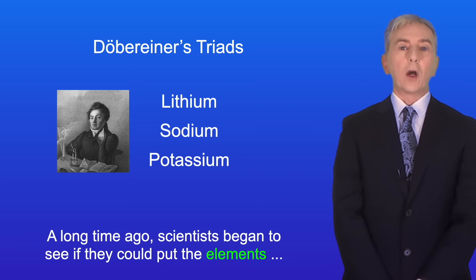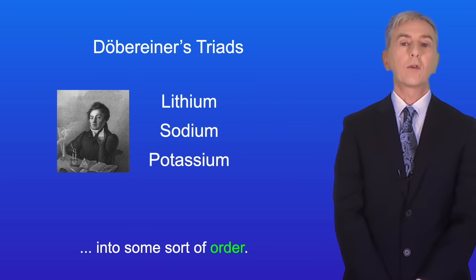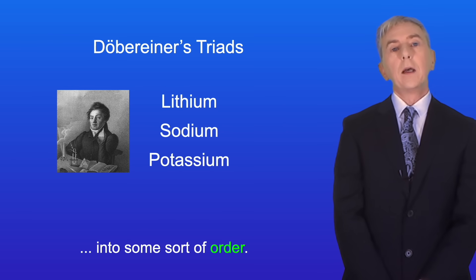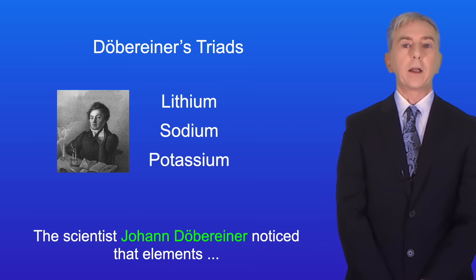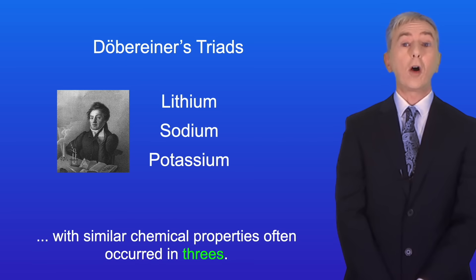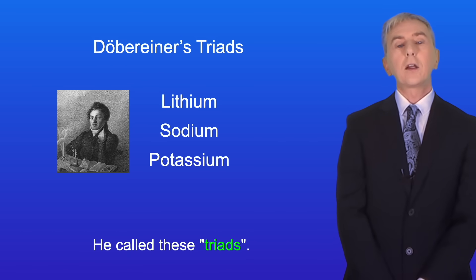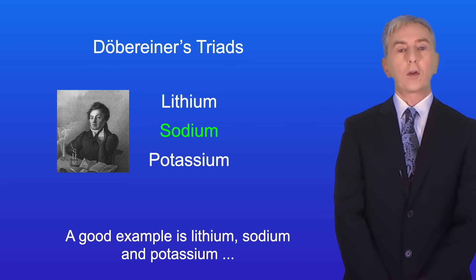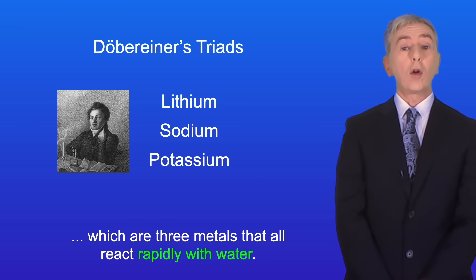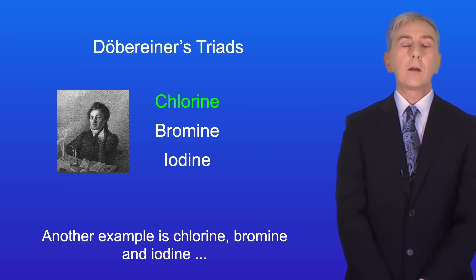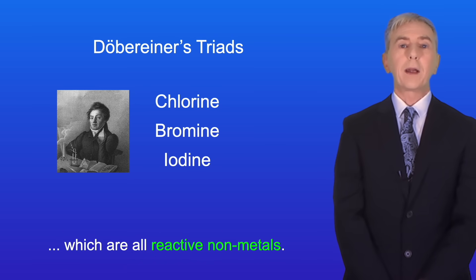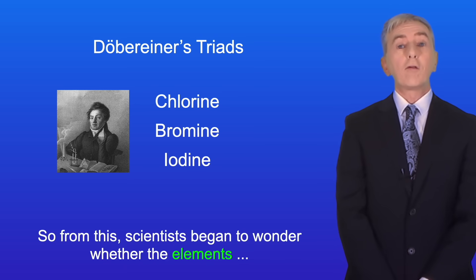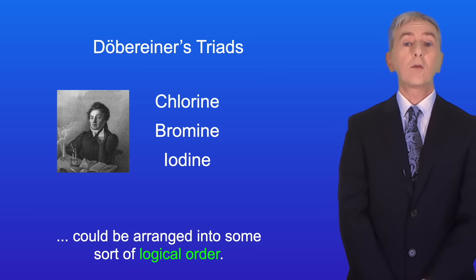A long time ago, scientists began to see if they could put the elements into some sort of order. The scientist Johan Döbereiner noticed that elements with similar chemical properties often occurred in threes, and he called these triads. A good example is lithium, sodium and potassium, which are three metals that all react rapidly with water. Another example is chlorine, bromine and iodine, which are all reactive non-metals. From this, scientists began to wonder whether the elements could be arranged into some sort of logical order.